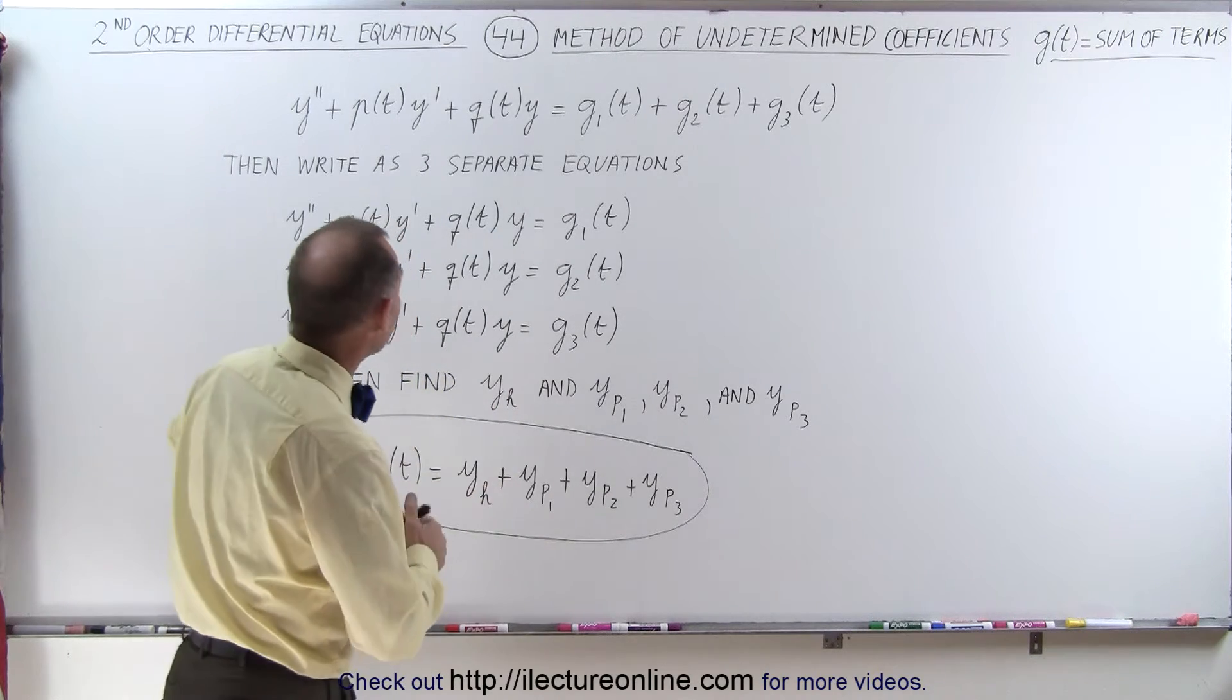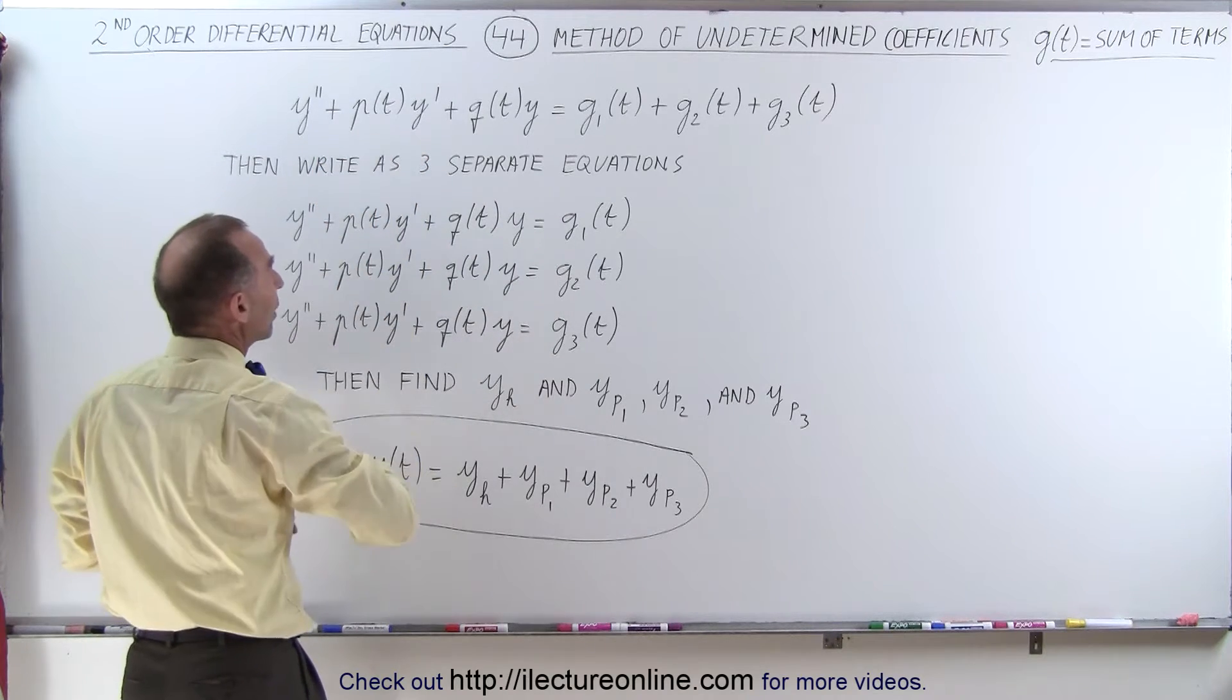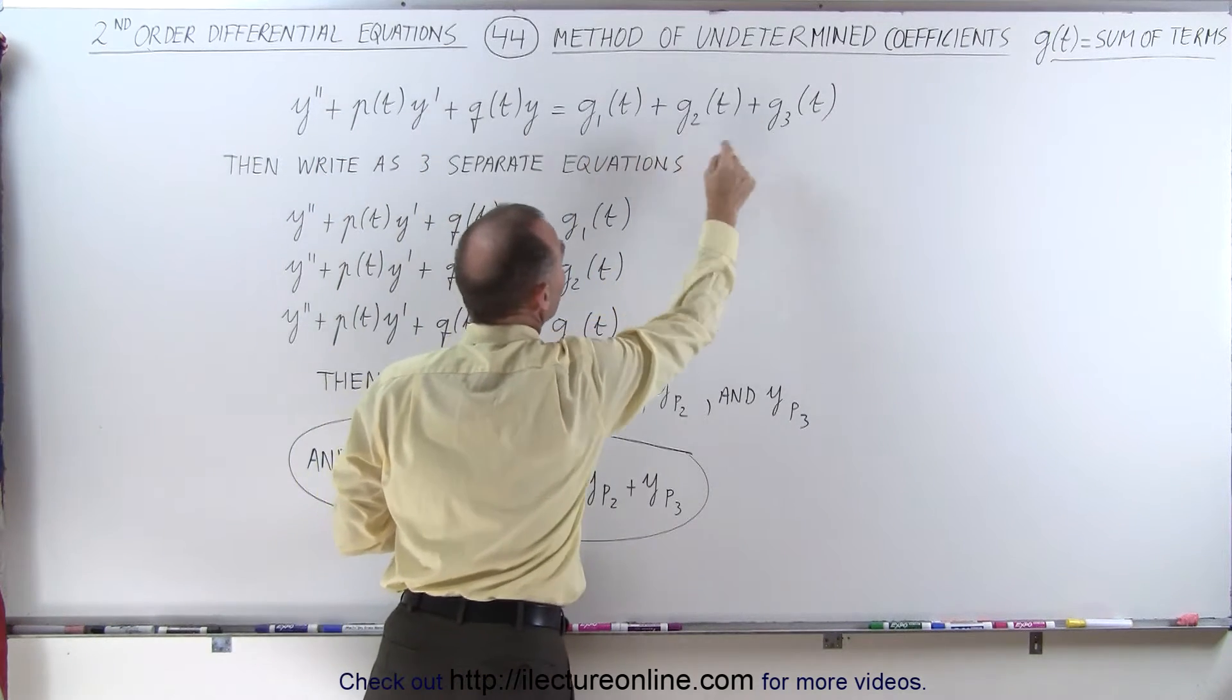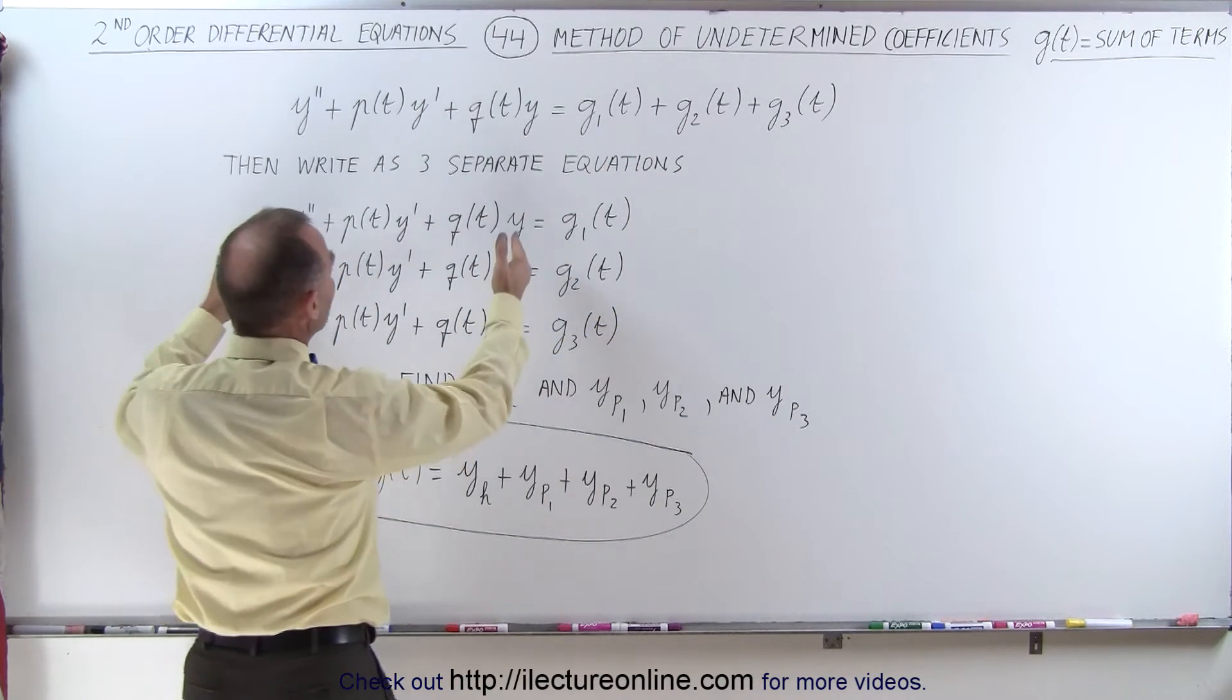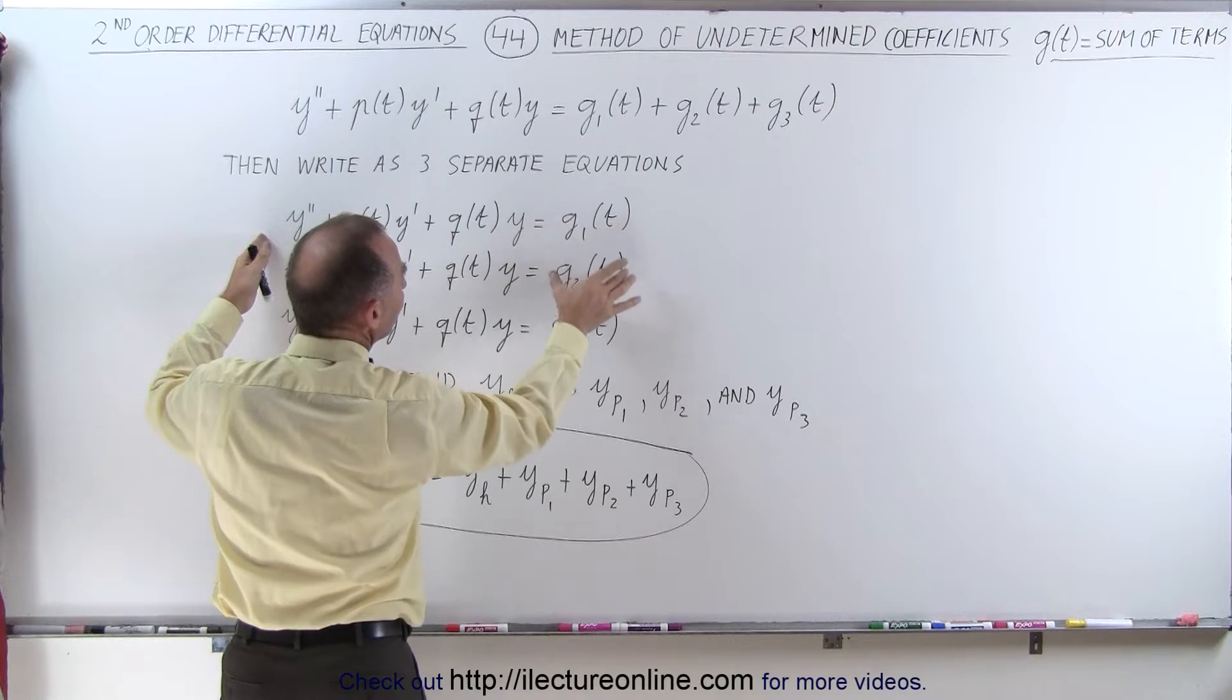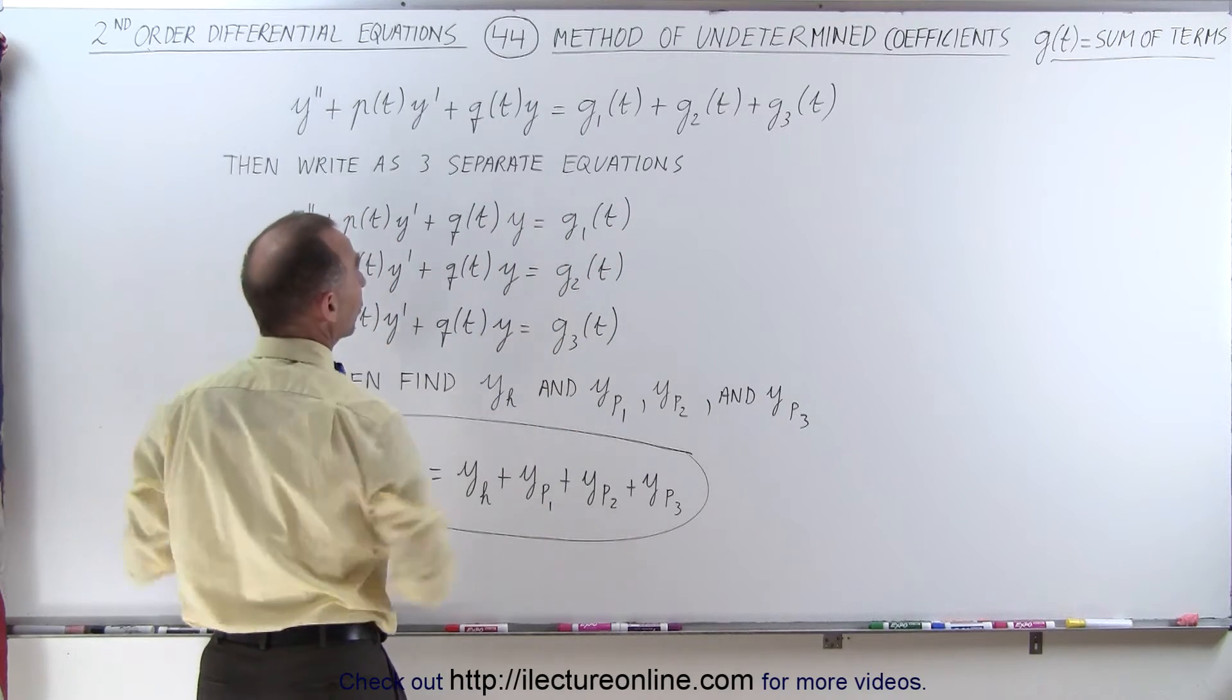The principle is that we're going to write this equation as three separate equations because we have three sums right here of three functions of t. We're going to write each of the equations with only one of the functions, one of the three functions. So we have three separate equations.